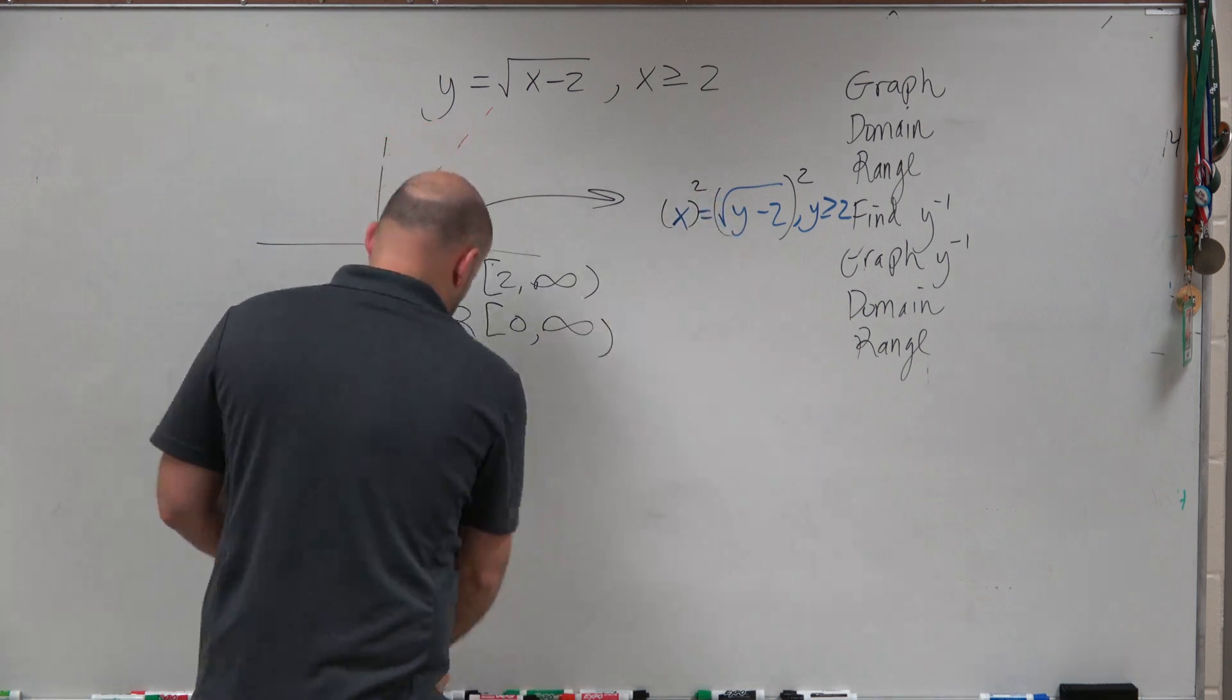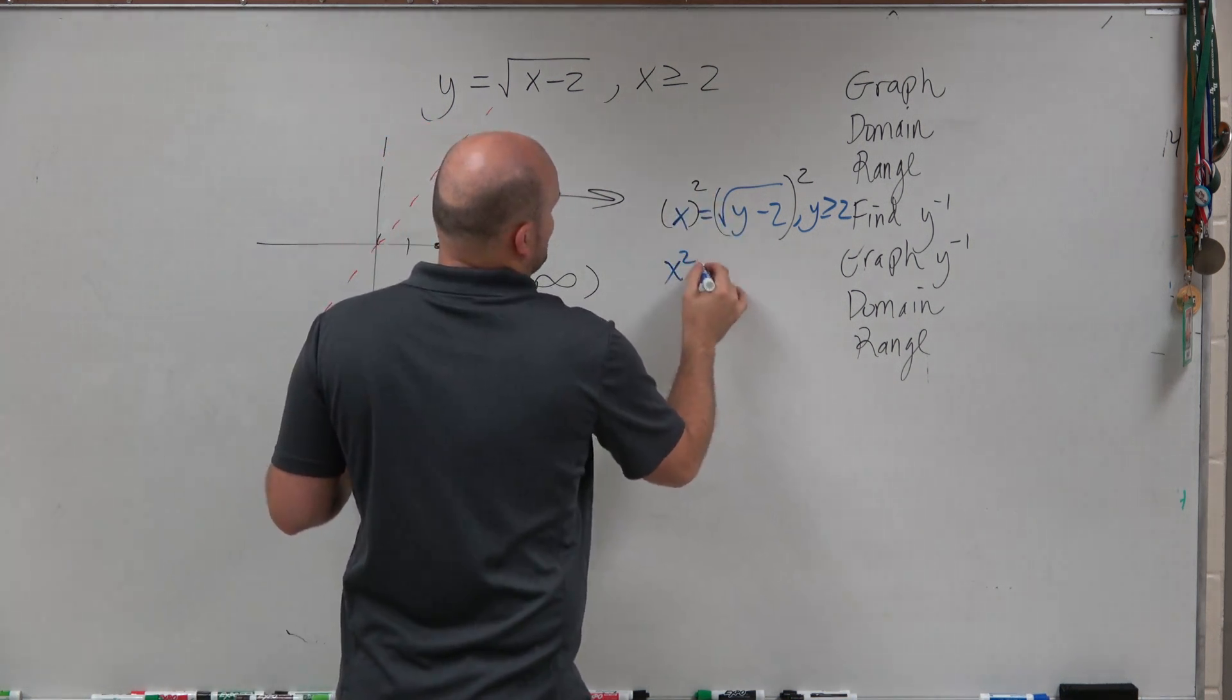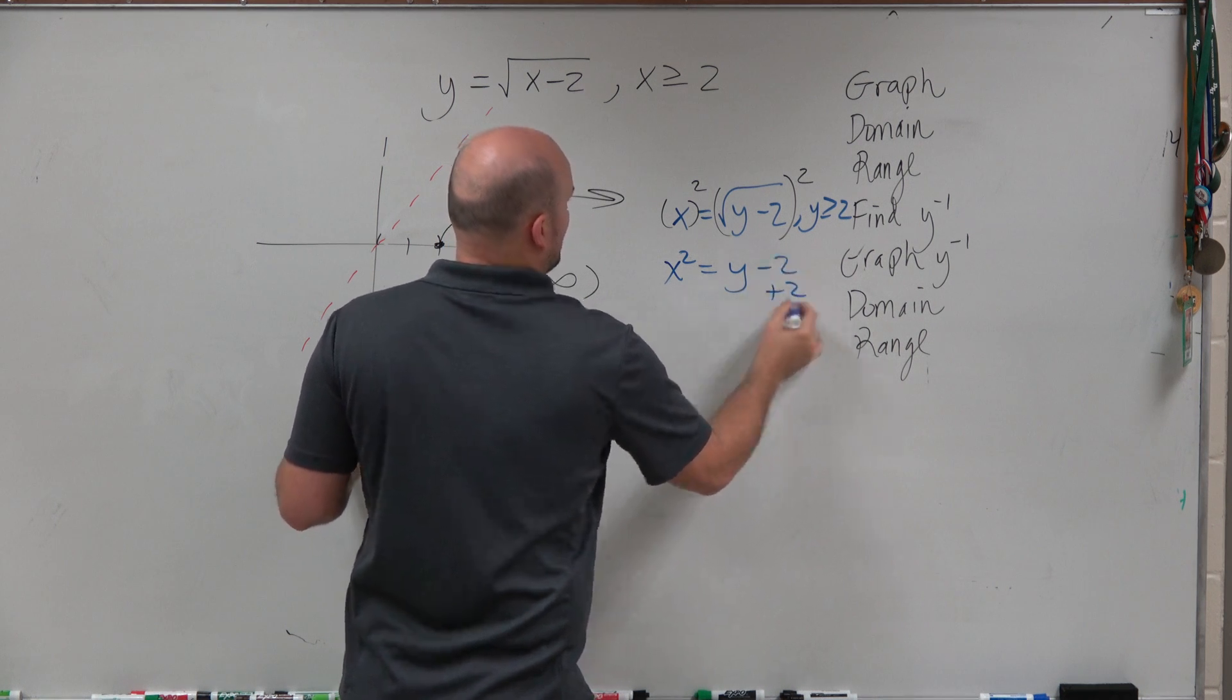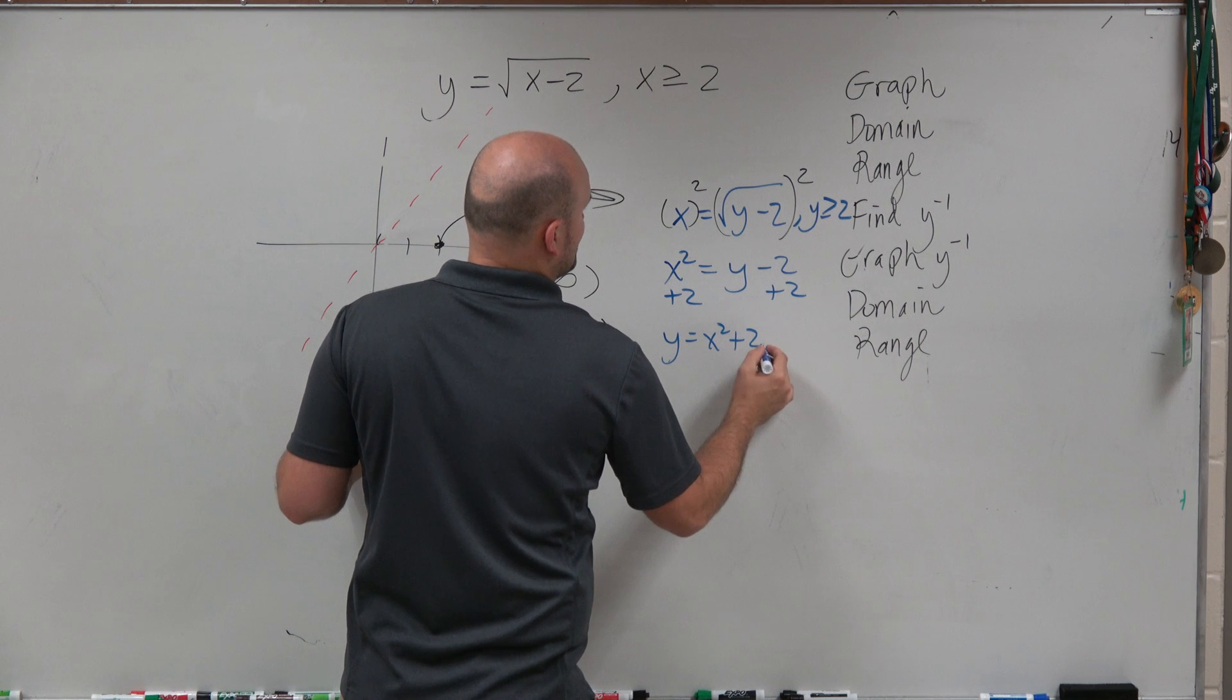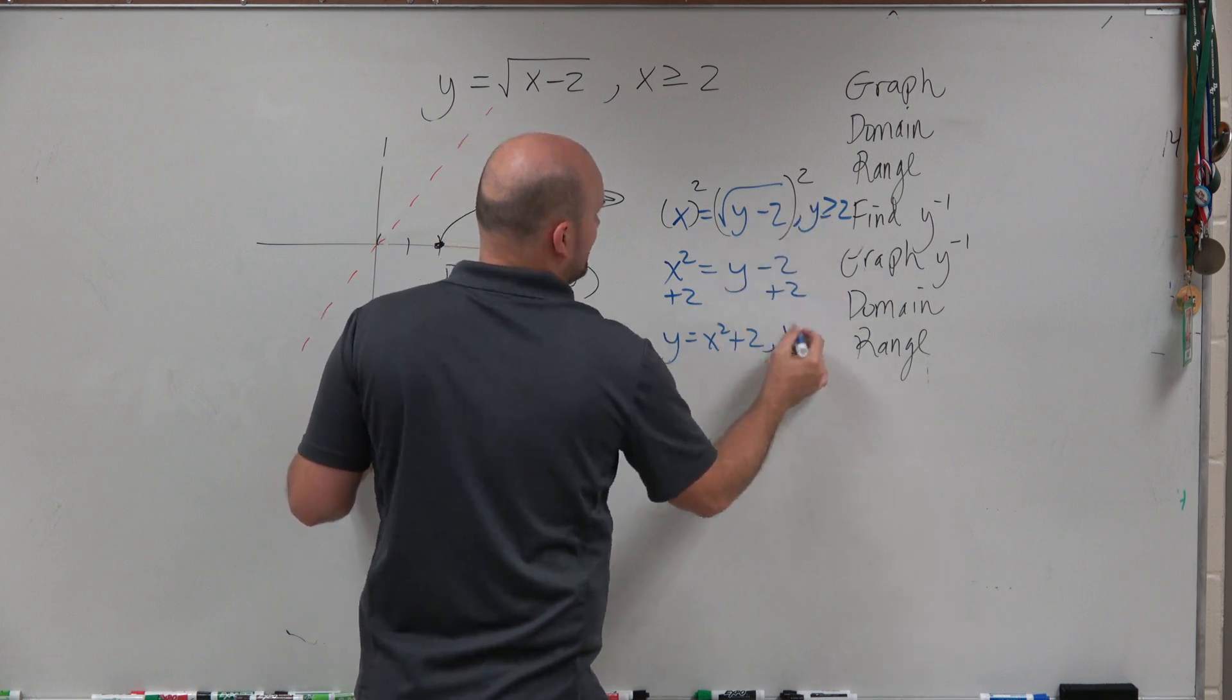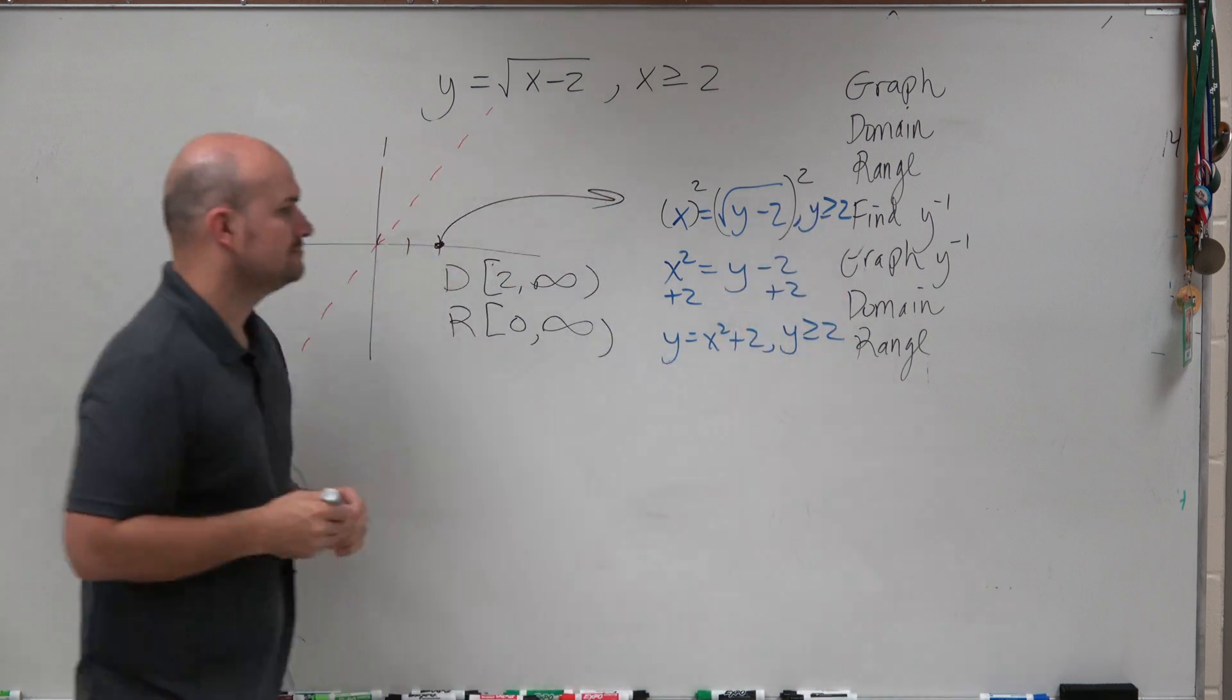Therefore, I'm left with x squared equals y minus 2. Add 2. y equals x squared plus 2. And then my constraint will come down with me. y is greater than or equal to 2.